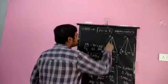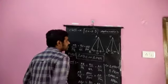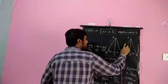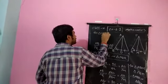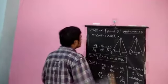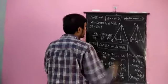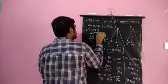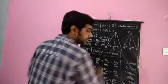Now, to prove triangle ABC similar to triangle PQR: in triangle ABC, side AB and side BC are proportional to PQ and QR of triangle PQR, and angle B equals angle Q (proved above). This gives side-angle-side similarity. Therefore, by SAS similarity, triangle ABC is similar to triangle PQR. Hence proved.